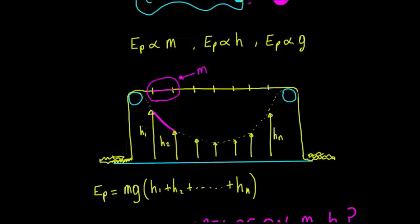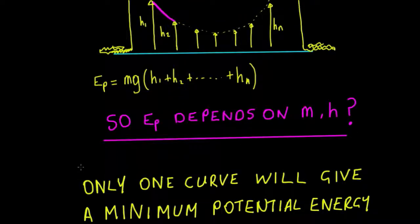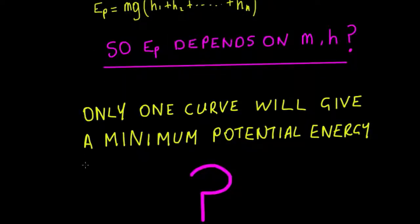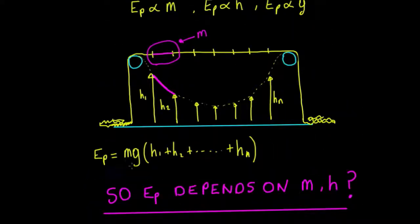We're going to try and work out how the potential energy depends on that mass and on the height. That's what we'll be covering in the next video. The main thing to note here is that there's only one curve that will give a minimum for the potential energy, and in the next video we'll derive what that curve is and see exactly how the mass and height interact to give the value for that potential energy.